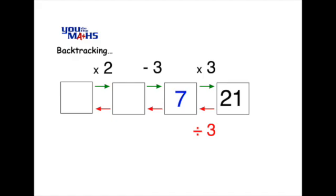And you can see that 21 divided by 3 as we move from right to left will equal 7. And 7 goes into the second last box.